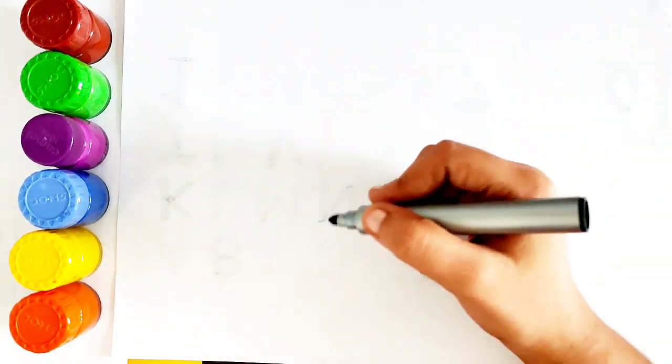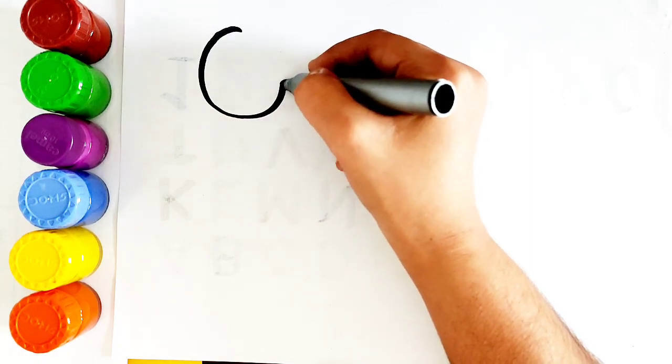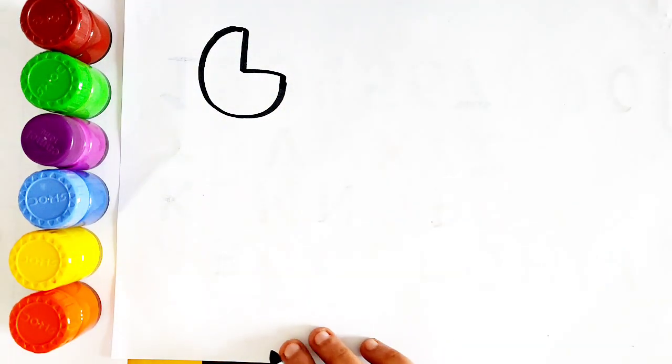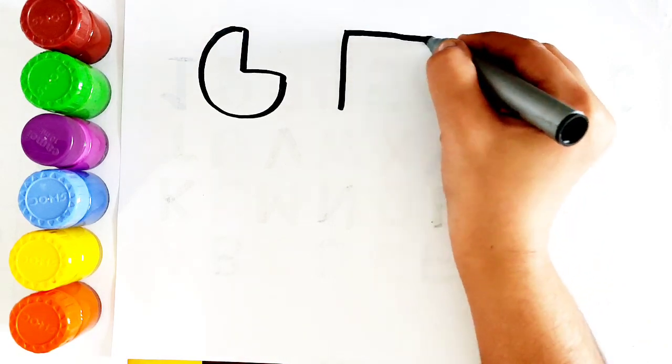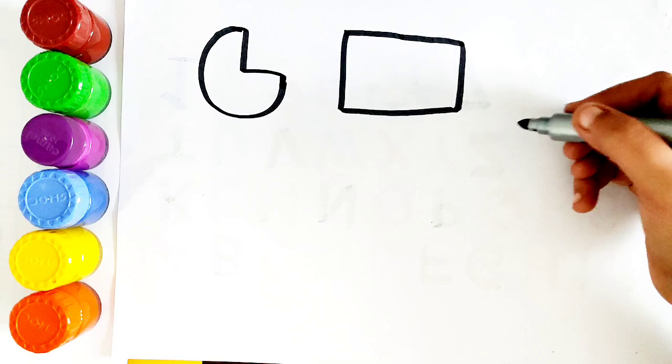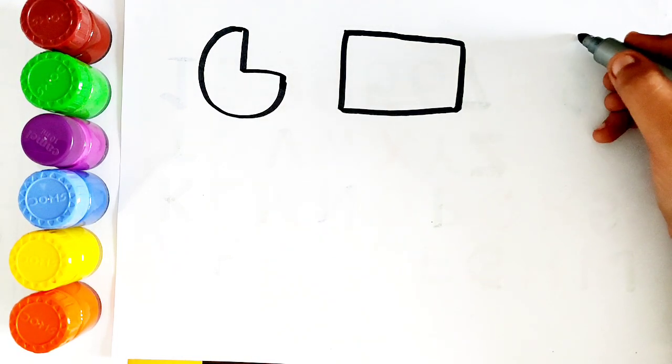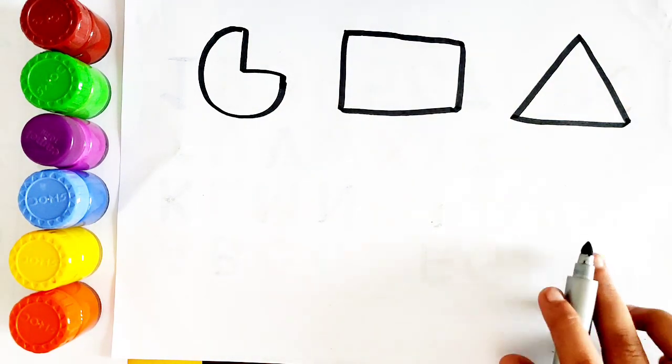Let's learn to draw some 2D shapes. Oval, oval. Rectangle, rectangle. Triangle, triangle.